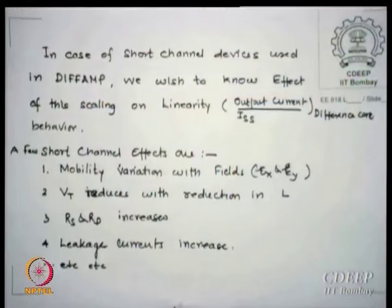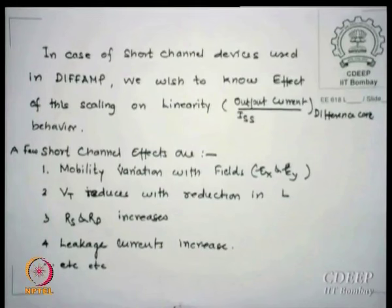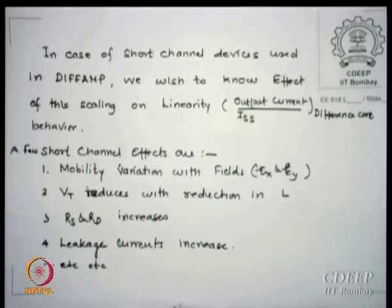The problem with short channel is that when you scale length and width, it creates a lot of problems on linearity, which essentially affects the output currents. Scaling is more relevant because we normally do voltage scaling. If you do field scaling — where all voltages, lengths, and everything scales — there is no problem. But that is not possible because power supply values are not decided by scaling people; they are decided by system people. So we started with 5 V, 3.3 V, 2.1 V, 1.5 V, 1.2 V, 1 V, 0.8 V — this is not something I can decide. If I scale, then the voltage-to-length ratio will be larger because voltage will not scale as much as lengths, and that is where performance problems arise.